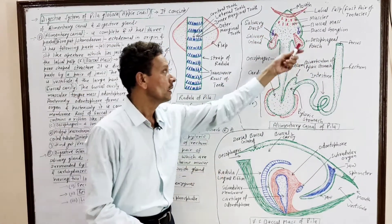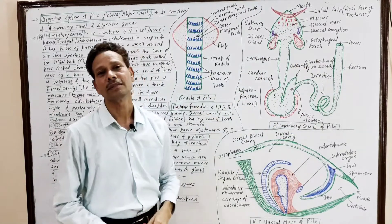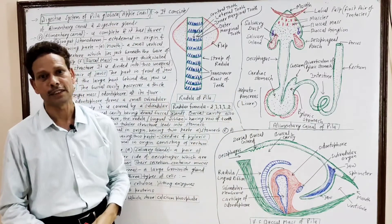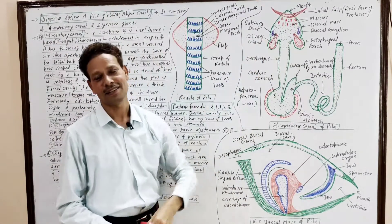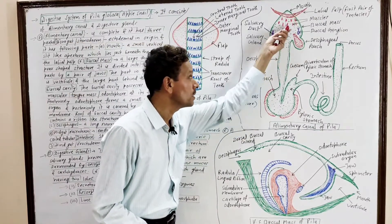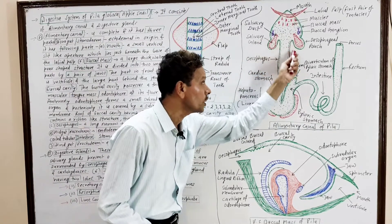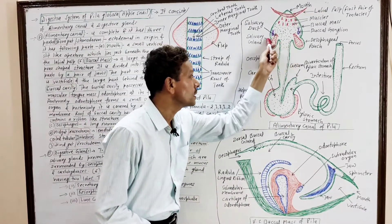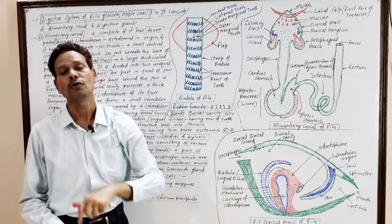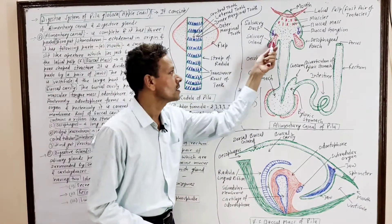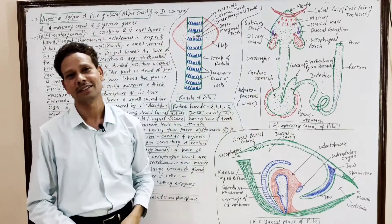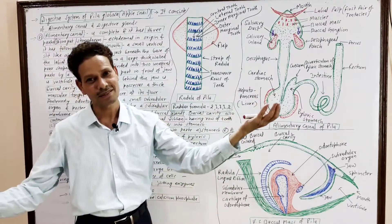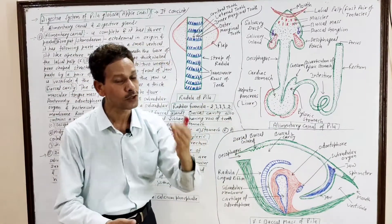In the entire digestive system, two types of digestive glands are associated. First, a pair of salivary glands, located in the posterior region of the buccal mass. Each salivary gland is surrounded by an esophageal pouch, and each possesses a salivary duct. The salivary glands secrete mucus and carbohydrate-digesting enzymes, because the animal consumes cellulose — it is herbivorous and consumes fibrous plants.